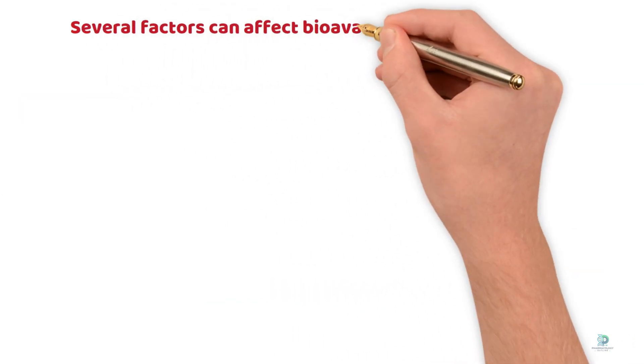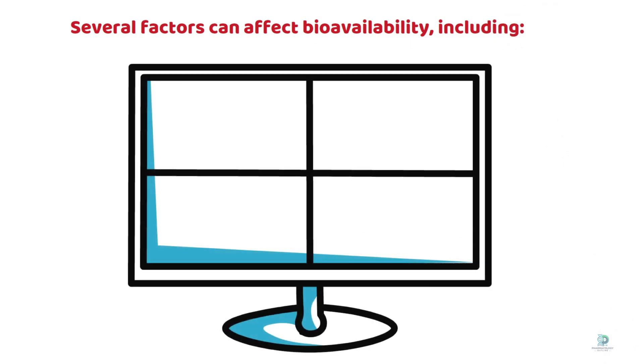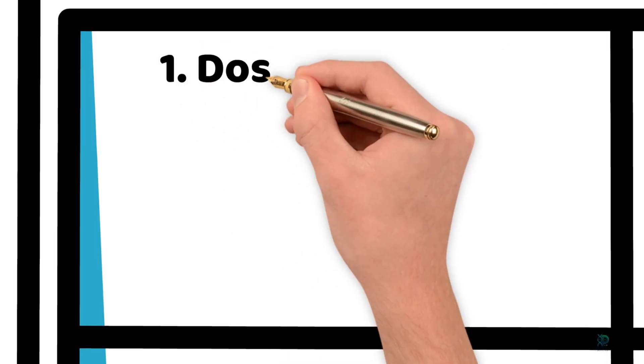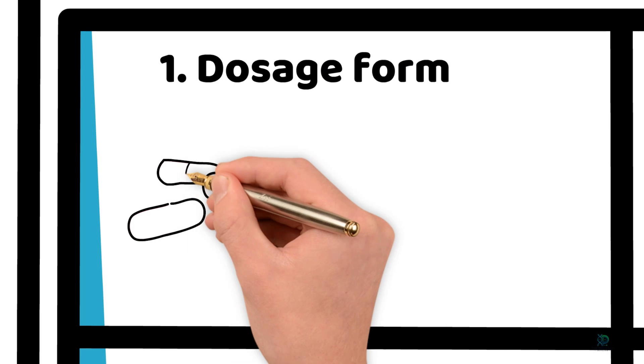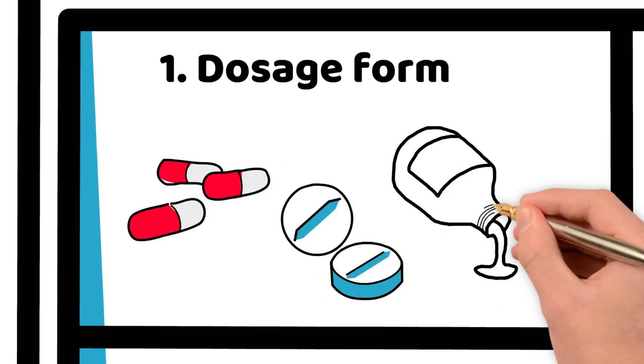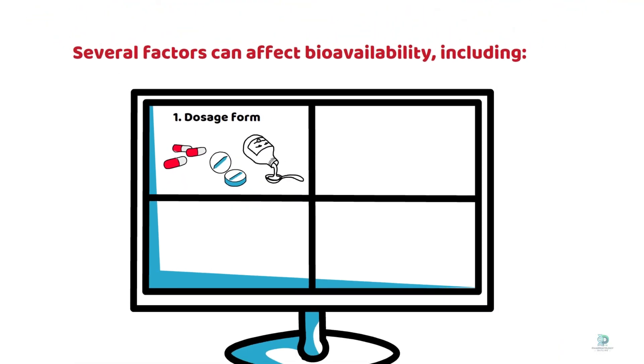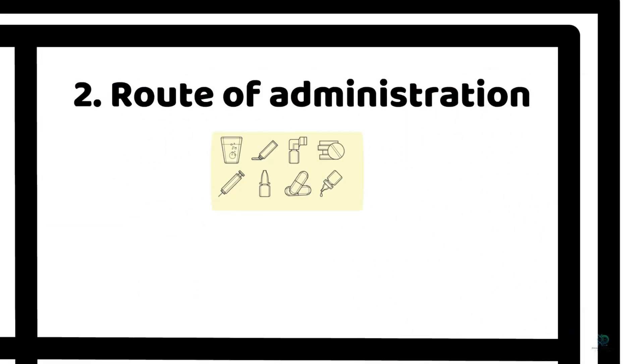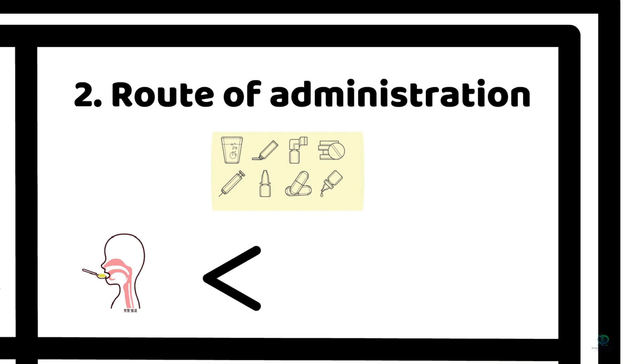Several factors can affect bioavailability, including: 1. Dosage form. The way a drug is formulated can influence how quickly it dissolves and is absorbed. Second, route of administration. Oral medications generally have lower bioavailability than injectable medications due to the first-pass effect in the liver.